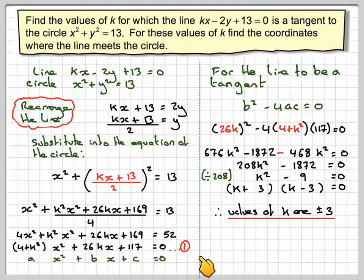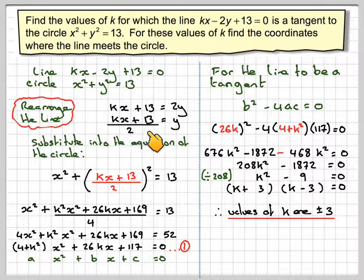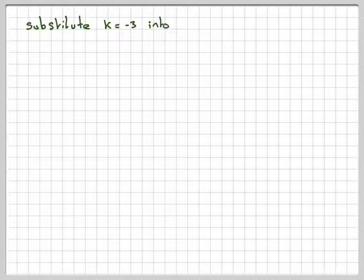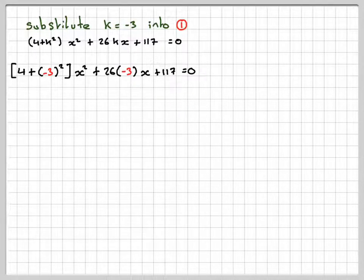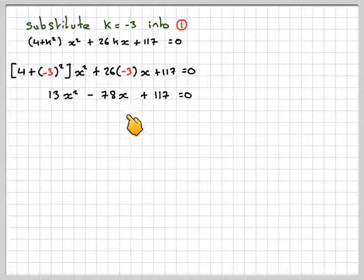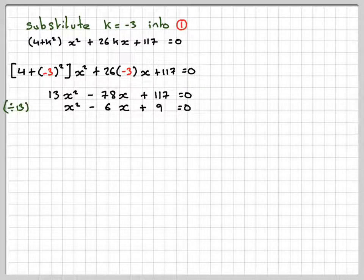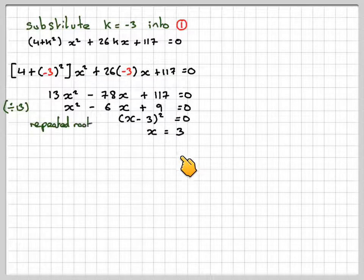For these values of k, we substitute them into equation 1 to find the x-values where the line and the circle intersect. Substituting k equals minus 3 into equation 1: (4 plus 9)x squared plus 26 times (minus 3) times x plus 117 equals 0, giving 13x squared minus 78x plus 117 equals 0. Dividing by 13 gives x squared minus 6x plus 9 equals 0, which factorises as (x minus 3) squared equals 0, giving a repeated root x equals 3.